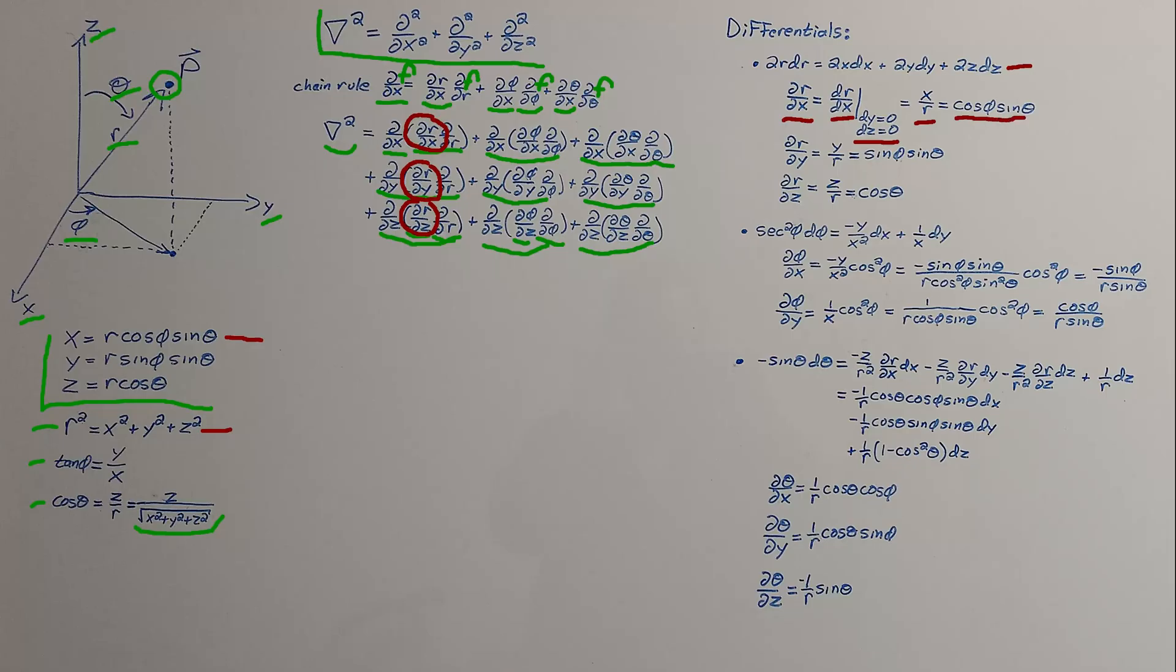Same thing, we use the same idea to get the partial of r with respect to y, just hold x and z to be constant. And to get the partial of r with respect to z, use our differential with x and y being constant.